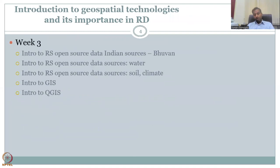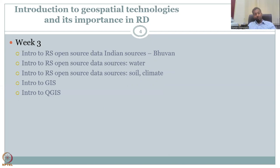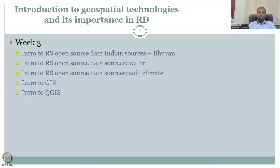In Week 3, we had introduction to remote sensing and open source data systems. Once we said remote sensing could be a potential tool, we needed to give resources for the data. Otherwise the misunderstanding is that it's a fancy tool that cannot be used for rural development. So we promised that in this course we only use open source systems and free data, so we can use it directly for rural development. We introduced data sources not only from India — Bhuvan — but also NASA and ESA, the US and European space agencies.